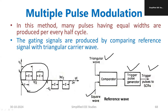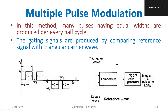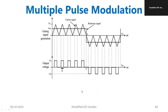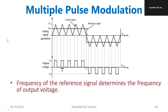How many pulses are there? There are two pulses in the positive half cycle and two pulses in the negative half cycle — this is the output. Whenever we are generating pulses, we use multiple pulses instead of a single pulse. I request everybody to refer to this diagram for a better idea. The frequency of the reference signal determines the frequency of the output voltage. If I want to increase the frequency, I have to increase the frequency of the reference signal.